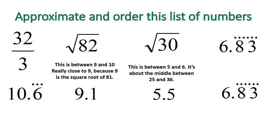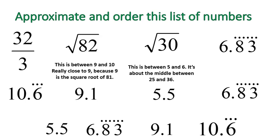And then my final one is already listed as a decimal, 6.838383 repeating. Now I have all of them in the decimal form, and I can put them in order: 5.5, 6.83, 9.1, and 10.6.